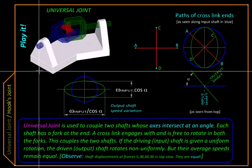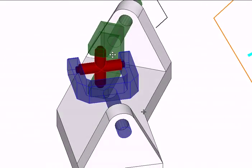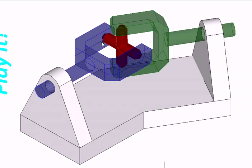The input and output shafts are shown in blue and green. Each one has a fork at its end, and sitting between these two forks, engaging with them through revolute pairs, is this red cross link.